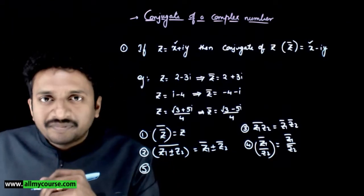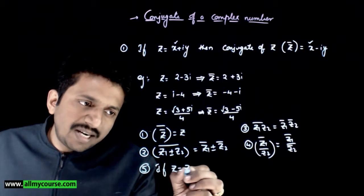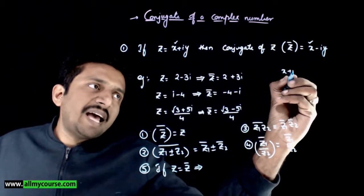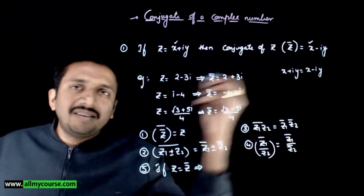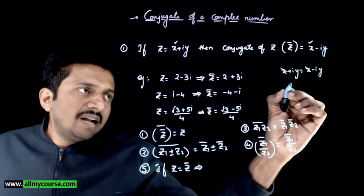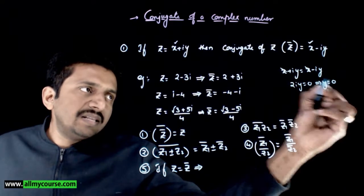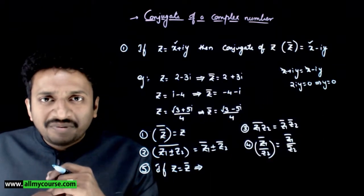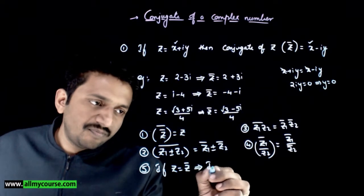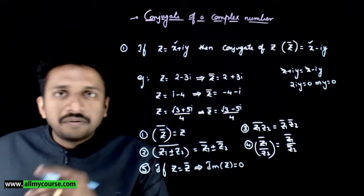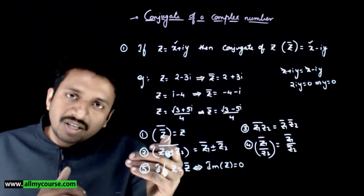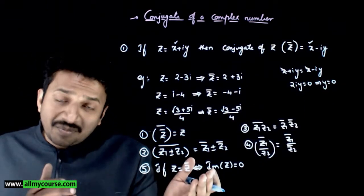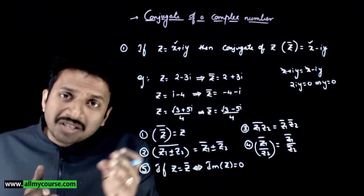If z is equal to z bar, that is x plus iy is the same as x minus iy, when will this happen? The x terms cancel, so 2iy should equal 0, which implies y equals 0. So if z equals z bar, then the imaginary part of z must be zero — meaning z is a purely real number, and hence the conjugate does not change anything.